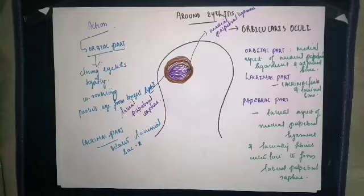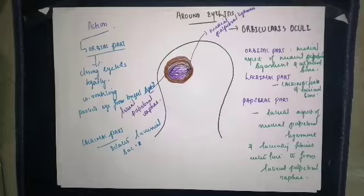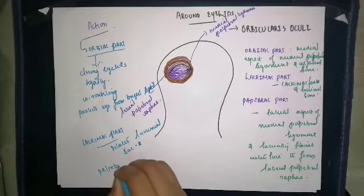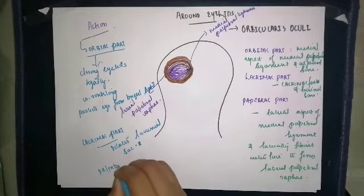The lacrimal part has a different function — it helps in dilation of the lacrimal sac, aids the flow of tears, directs the lacrimal punctum toward the lacus lacrimalis, and also supports the lower eyelids. Its major action is dilation of the lacrimal sac.